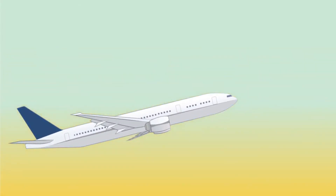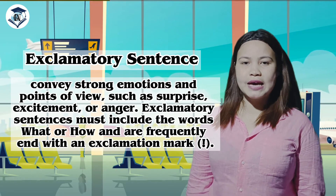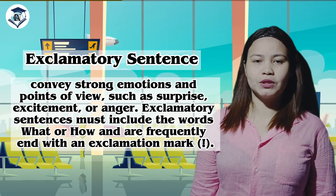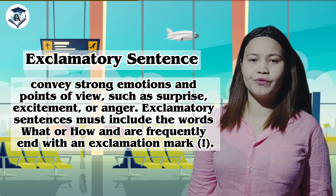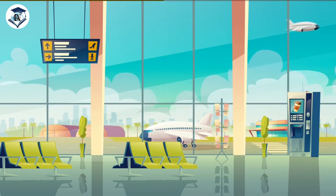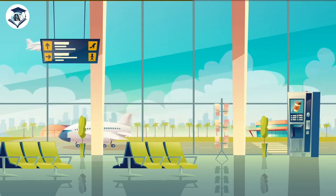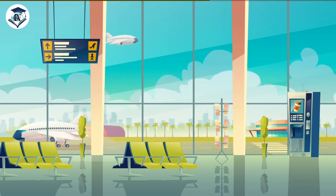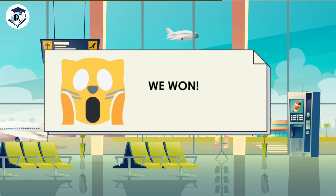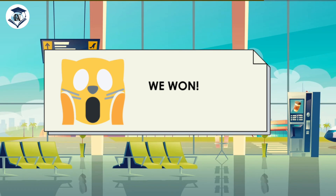We are now off to our next destination. Exclamatory sentences convey a strong emotion such as surprise, excitement, and anger. Exclamatory sentences must include the words 'what' and 'how' and frequently end with an exclamation mark. Examples: 'What a pleasant surprise!' and 'Oh, how lovely!' Activity: 'We won!' — What makes this sentence exclamatory? Very good. This sentence expresses strong emotion, which is extreme happiness.